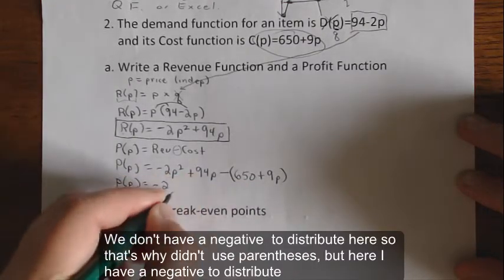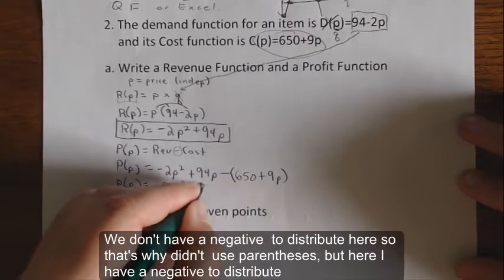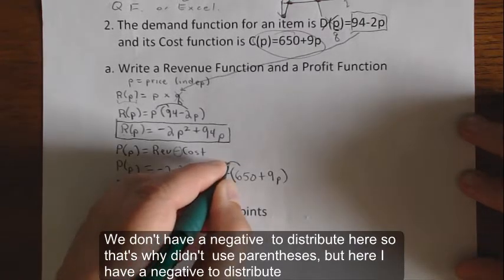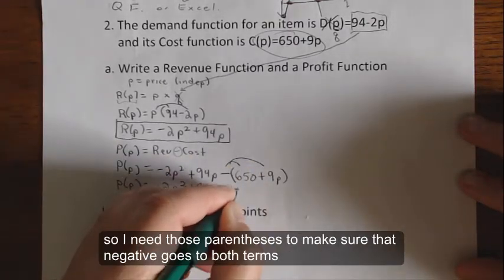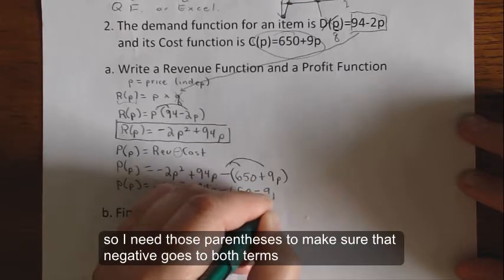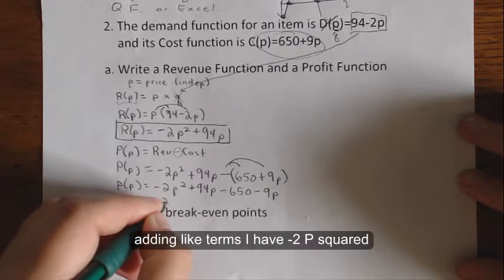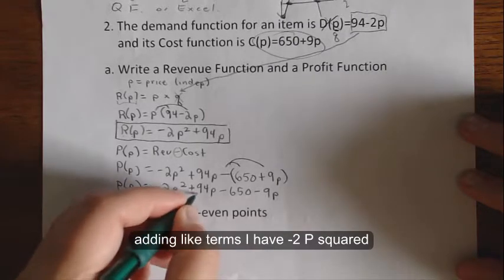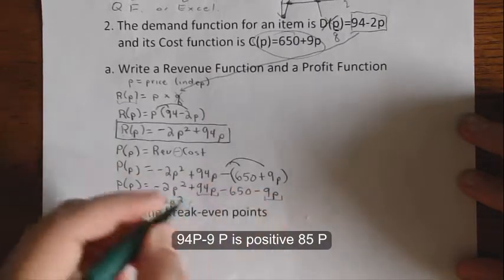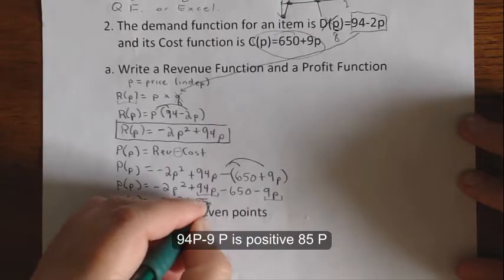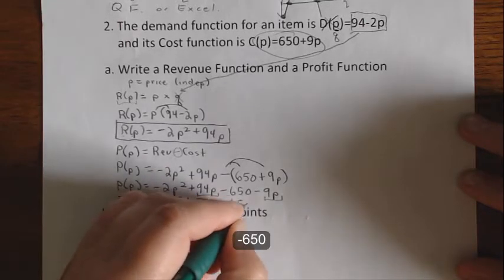We don't have a negative to distribute here, so that's why I didn't use parentheses, but here I have a negative to distribute, so I need those parentheses to make sure that negative goes to both terms. Adding like terms, I have -2p², 94p - 9p is +85p - 650.